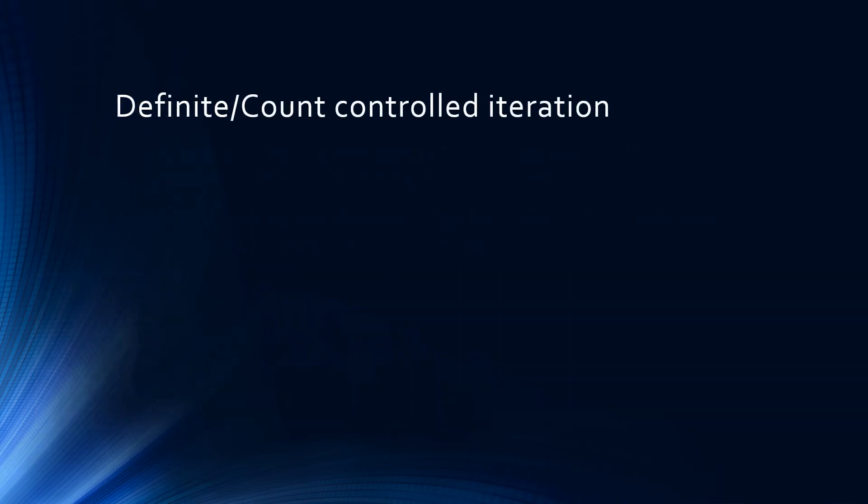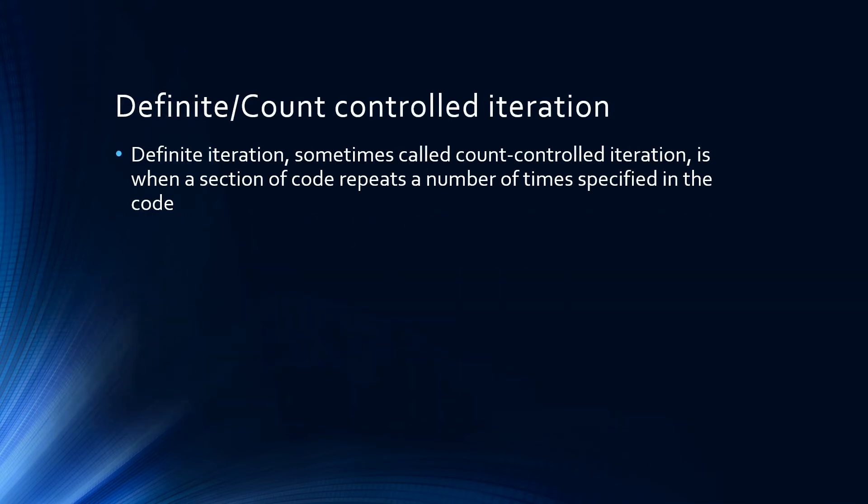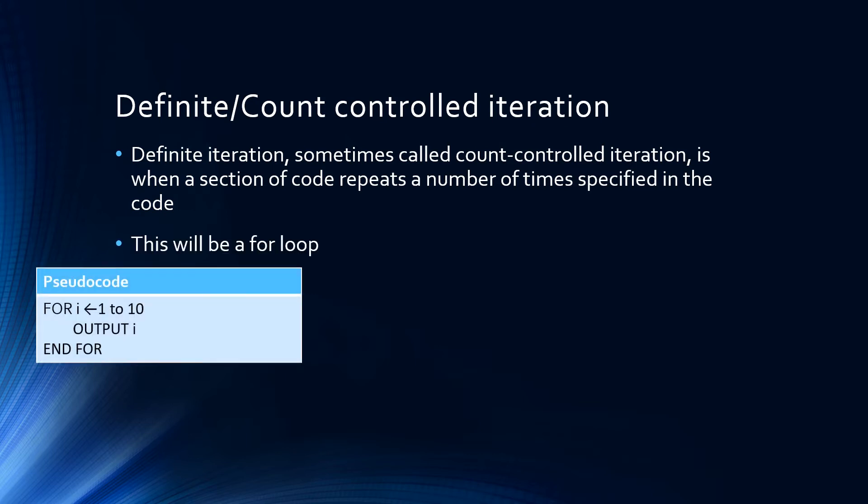Definite iteration, also called count controlled iteration, is when we specify how many times we want a section of code to be repeated. Definite iteration is performed using a for loop. Notice some of the features of our pseudocode. First, we create a variable and assign it a range of numeric values. In pseudocode, we specify the first number that we wanted to start at and we include the last number we wanted to include.